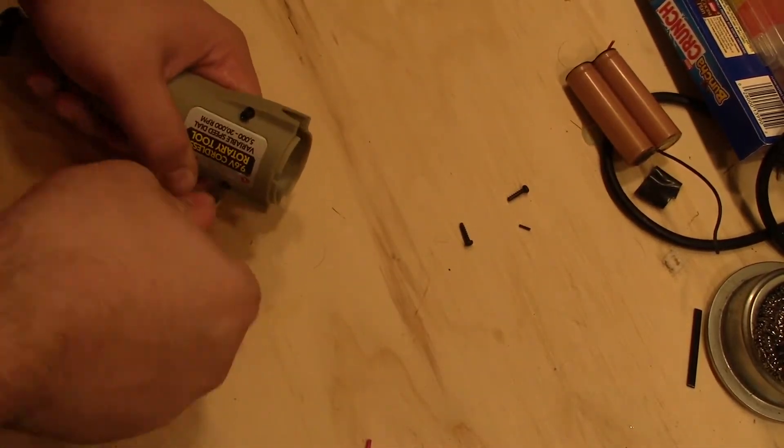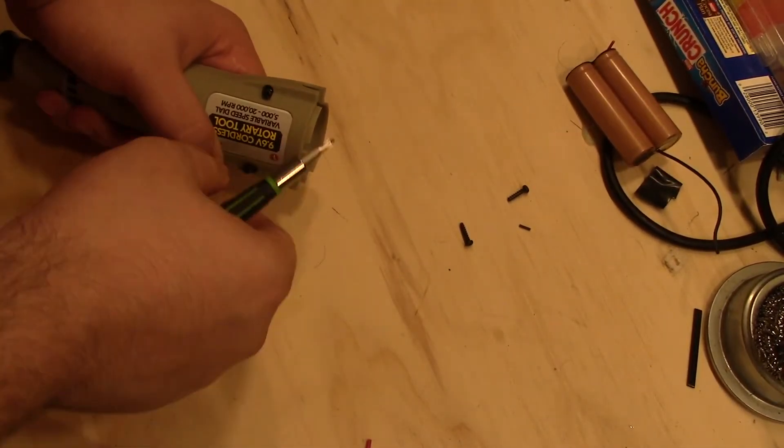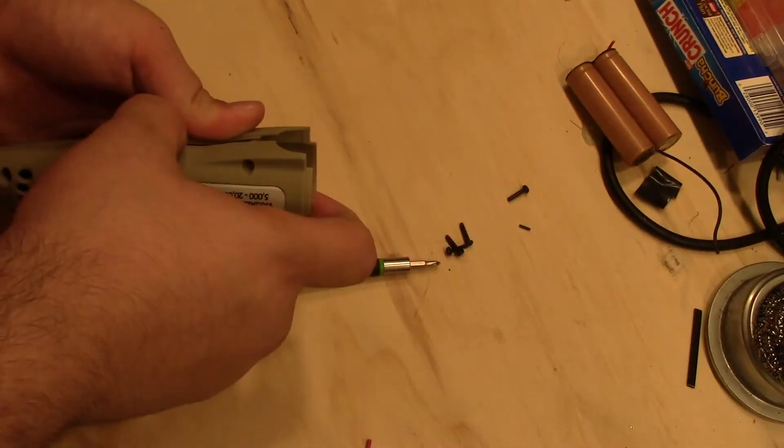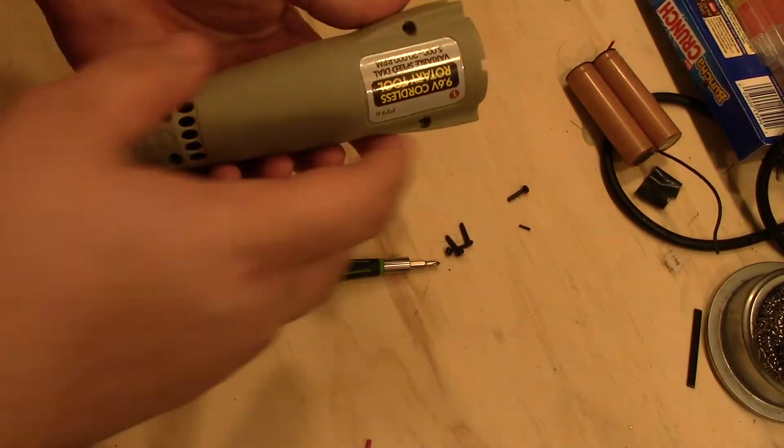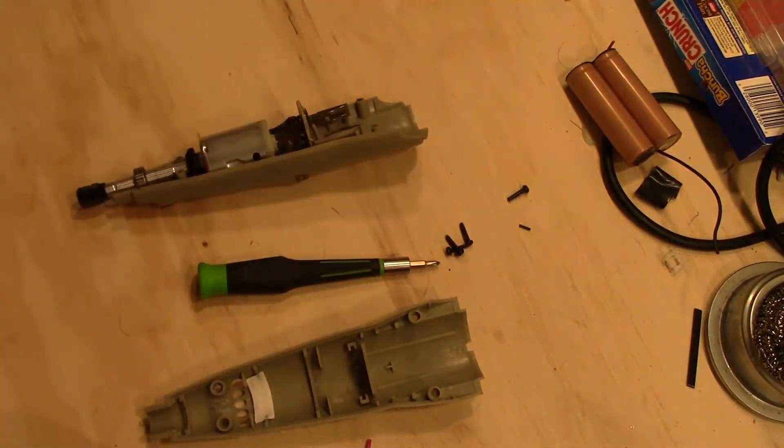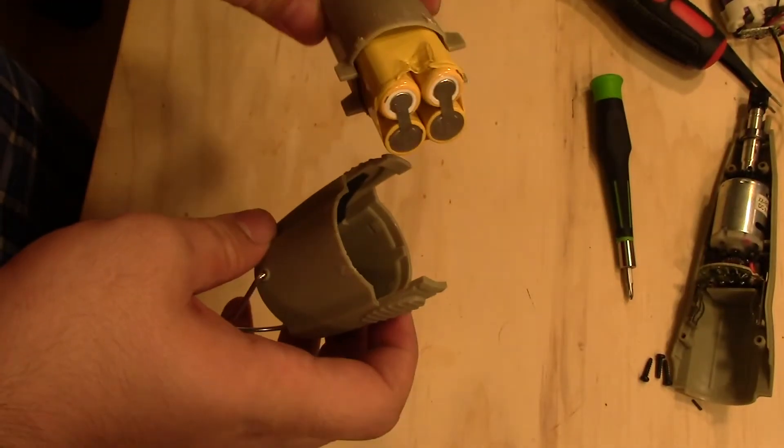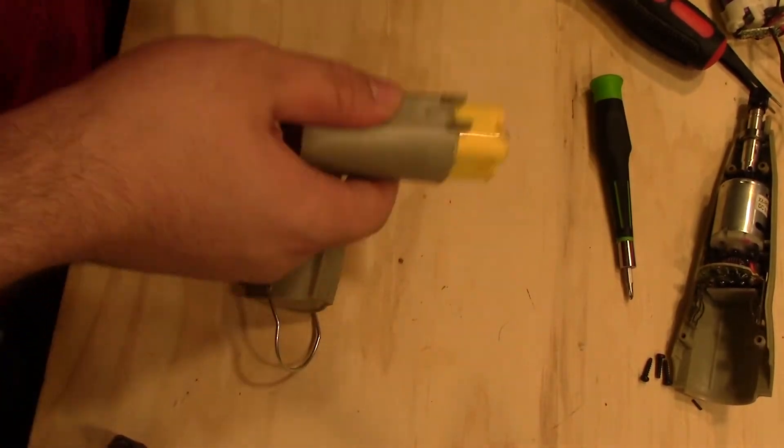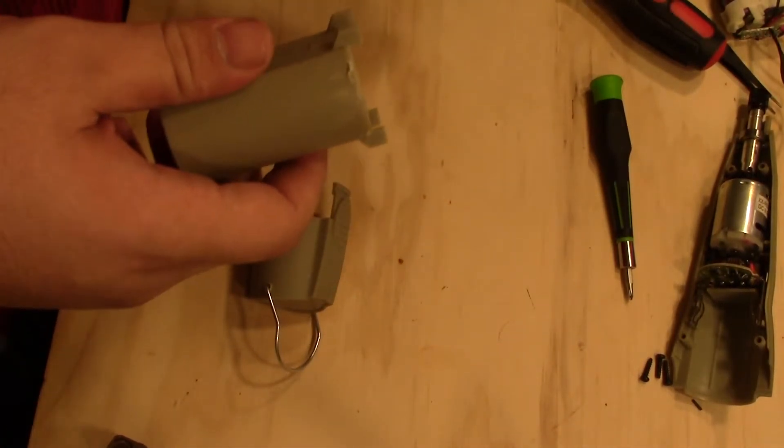Before we go ahead and add that, let's take apart the Dremel itself and see what we're working with. To clean up the placement of the new batteries, I decided to take apart the old battery pack just so I can get its housing for the new ones.